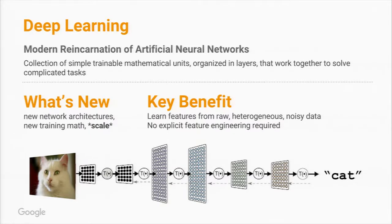You can see a diagram here of a simple convolutional neural network. What's changed over the past five years is that these architectures have gotten a lot bigger, they're trained on a lot more data, and there are some new ideas mathematically — but overwhelmingly there's an increase in scale. The advantage of deep learning is that you're able to learn features automatically from raw, heterogeneous, noisy data, without the explicit feature engineering typical in other machine learning techniques.